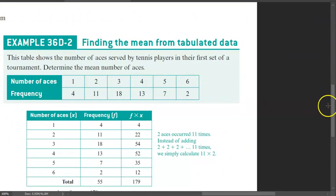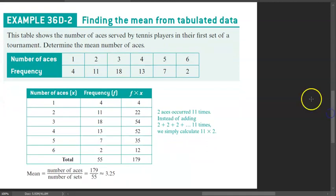And the second and last example, we're going to be looking at finding the mean from tabulated data. Tabulated, it's a fancy phrase. It just means table. It just means table data. This table shows the number of aces served by tennis players in their first set of a tournament. Determine the mean number of aces. Now we have to just be careful of how we interpret this information.